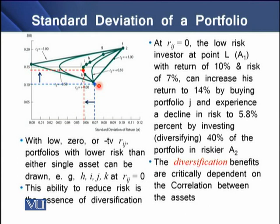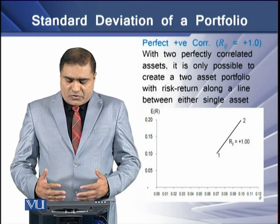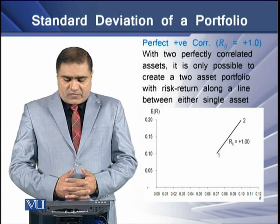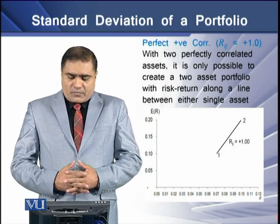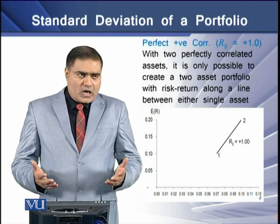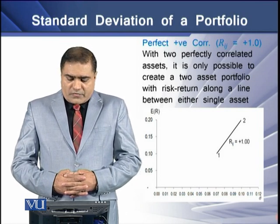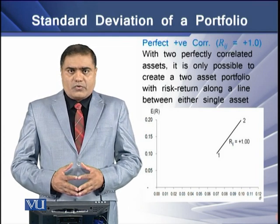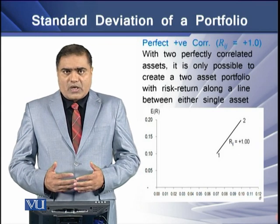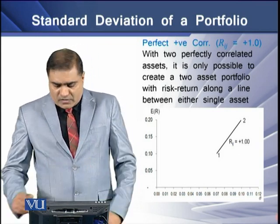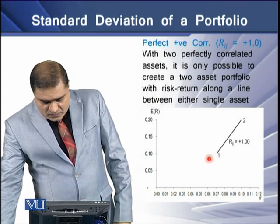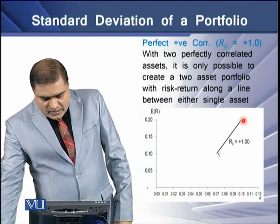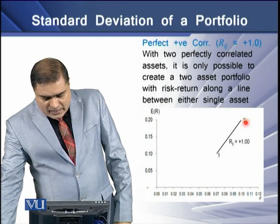This ability to reduce risk is the essence of diversification. With perfectly correlated assets (R = +1), it is only possible to create a two-asset portfolio with risk-return combinations along a straight line between either single asset.